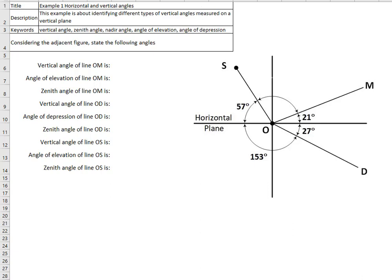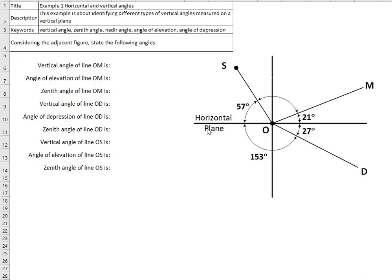This example is about calculating or identifying the vertical angle of different types. We have this figure with the horizontal plane, and lines OM, OD, and OS. Line OM is 21 degrees above the horizon, line OD is 27 degrees below the horizon, and line OS is 57 degrees above the horizon from the other side. What is the vertical angle of each line?